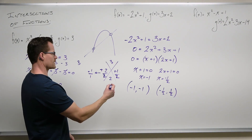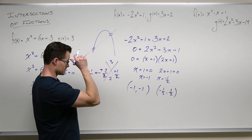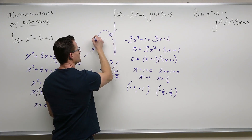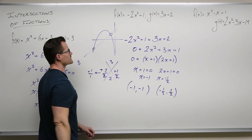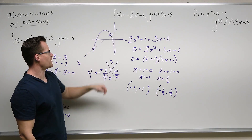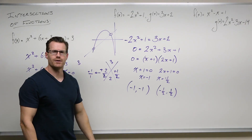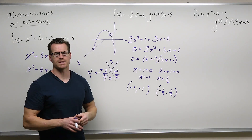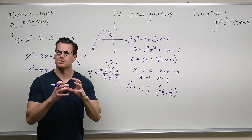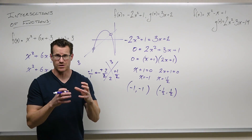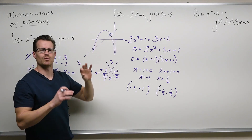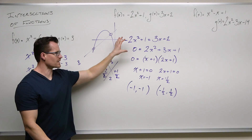So that would look something like this — plug in negative 1, get negative 1; plug in negative 1 half, get positive 1 half. That's about where that function crosses the other function, where the two functions intersect. That's the downward opening parabola and a positive-sloped line, and we're finding where those things cross — doing it in kind of a cool way.